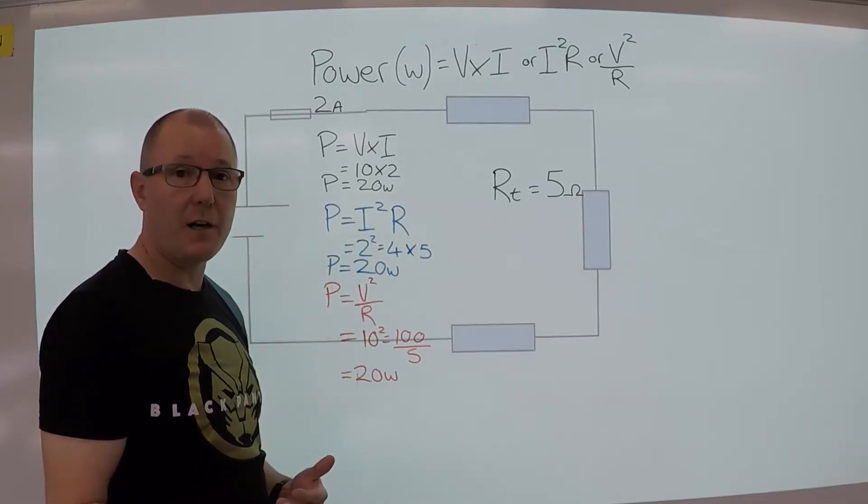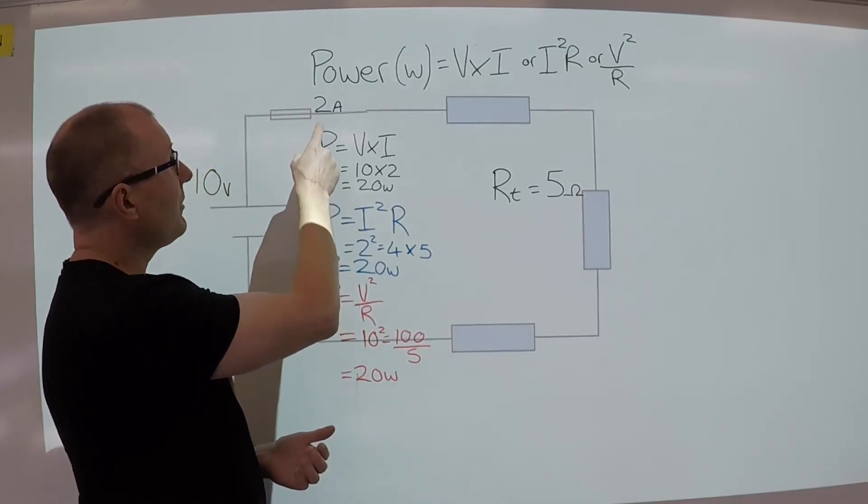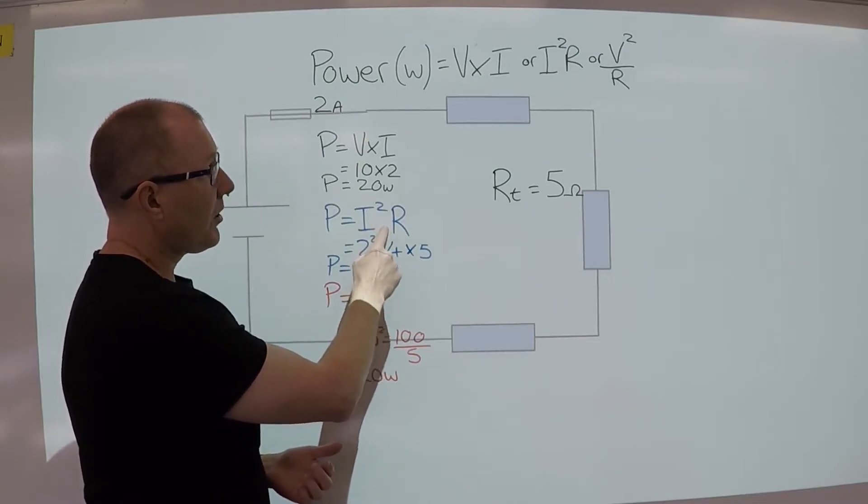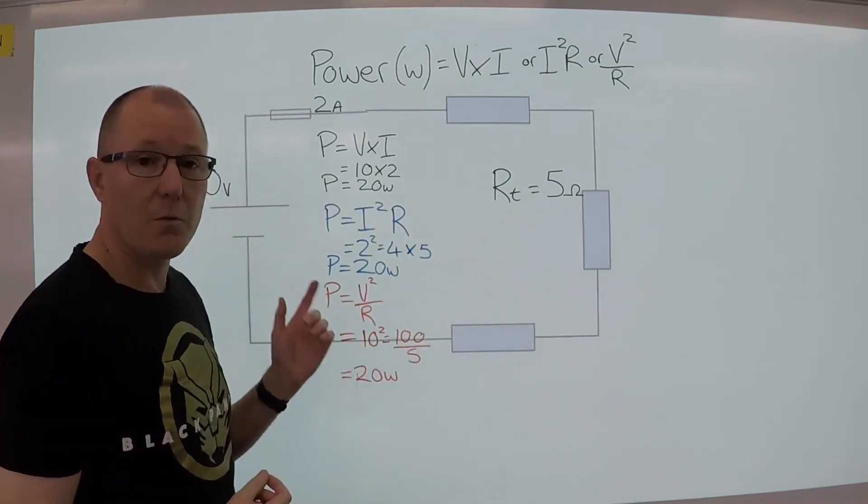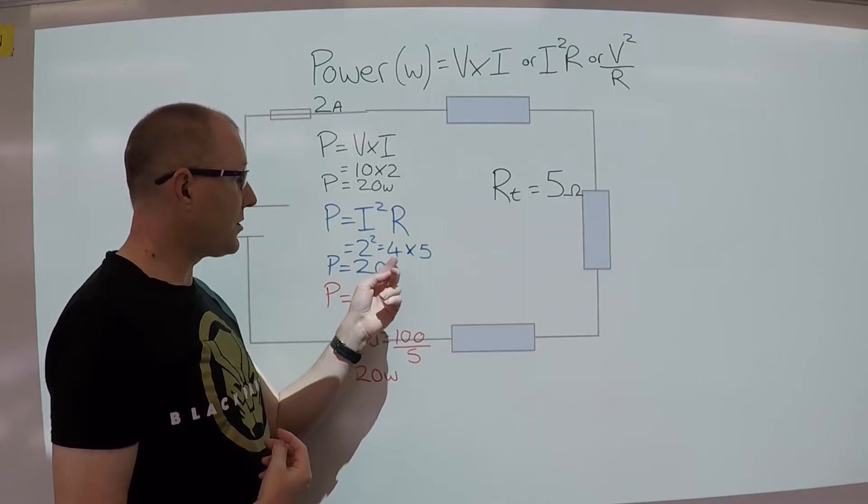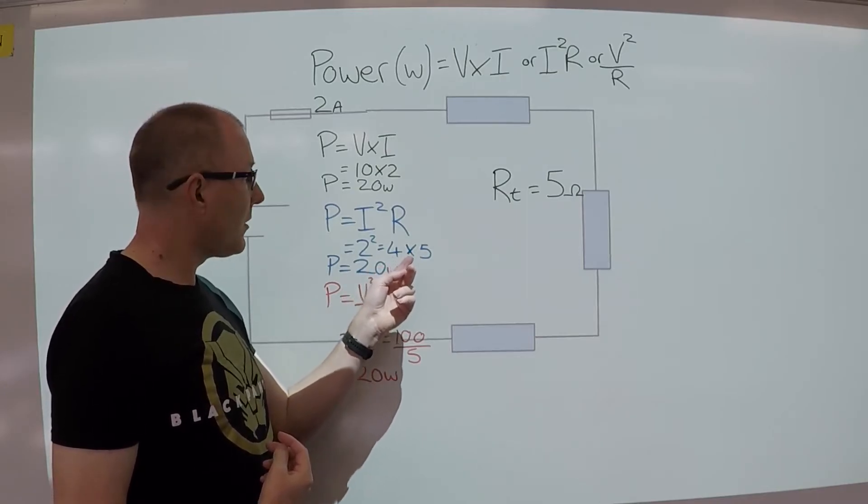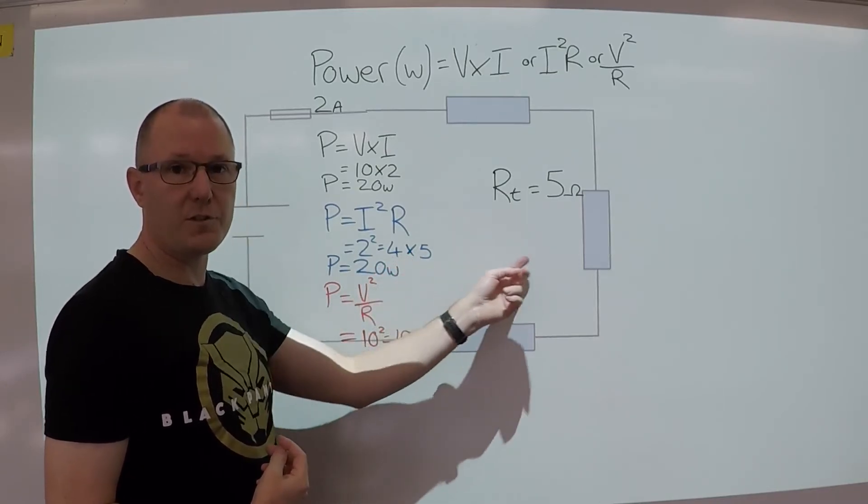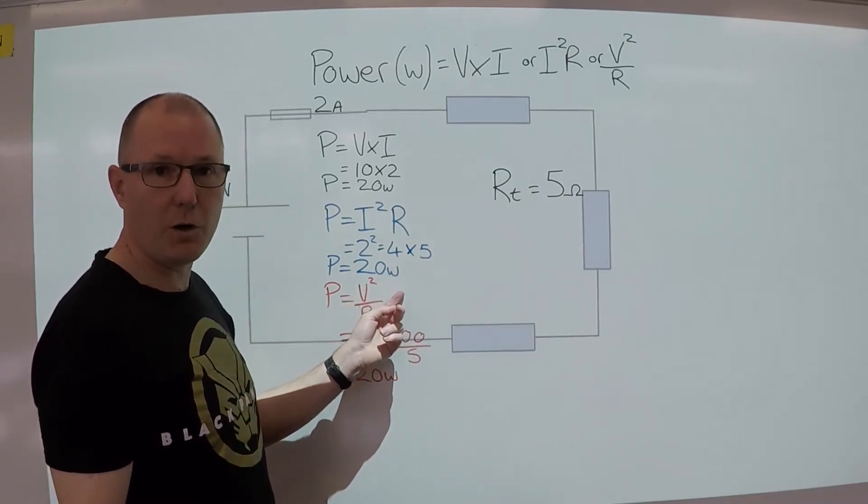Or if we've got the current and resistance we can use I squared R, which is the current multiplied by the resistance, which is 2 squared, which is 4, multiplied by 5, which is the resistance, and that gives us 20 watts.